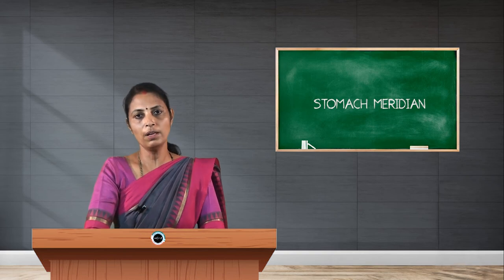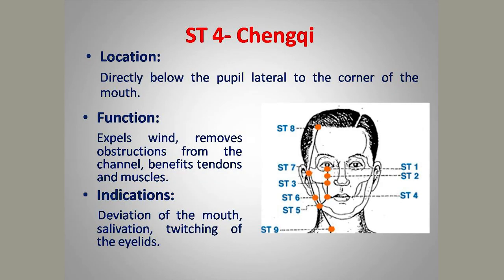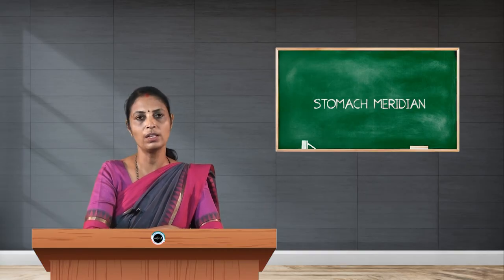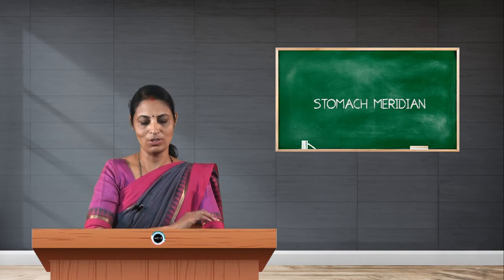Stomach 4, Dicang, is one of the very important therapeutic points, located 0.4 cun lateral to the angle of the mouth. Its function is to remove excess wind and obstruction of the stomach meridian. Indications mainly include paralysis of the facial nerve and trigeminal neuralgia. The needling technique is 0.5 cun straight.